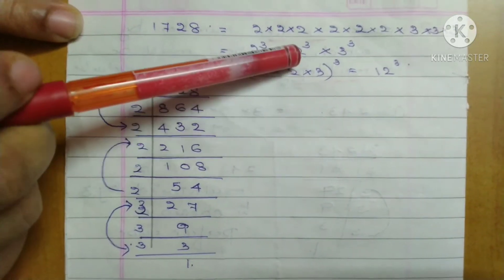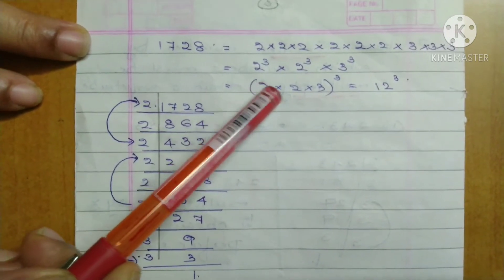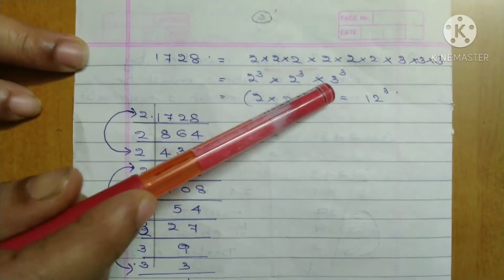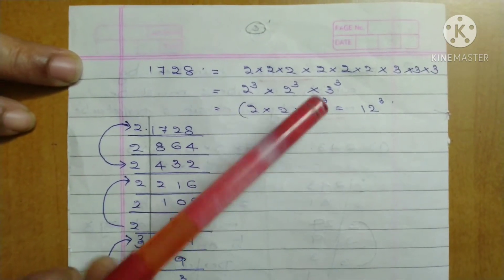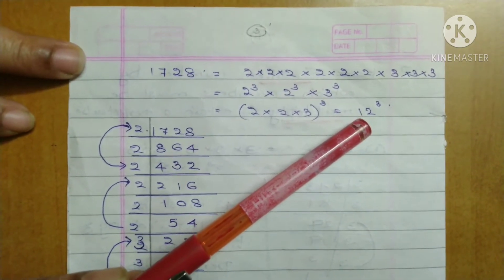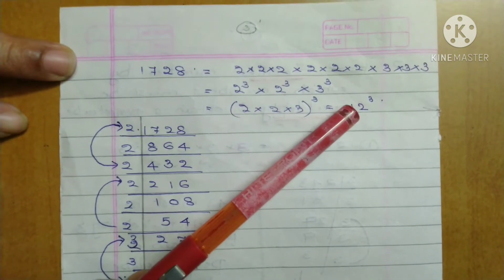That means 2³ × 2³ × 3³. We can write this as (2 × 2 × 3)³. 2 times 2 is 4, 4 times 3 is 12. So this is 12³, meaning 1728 is the cube of 12.